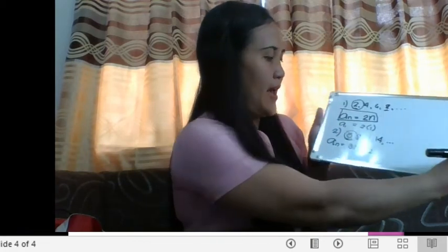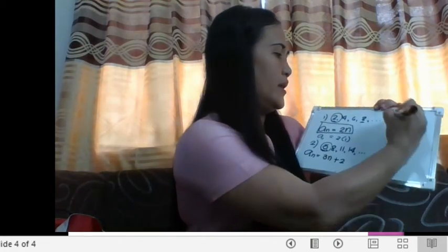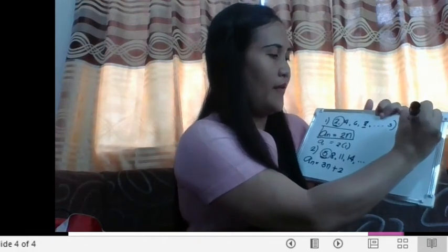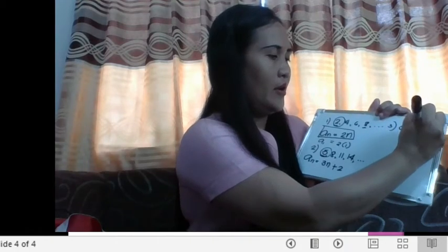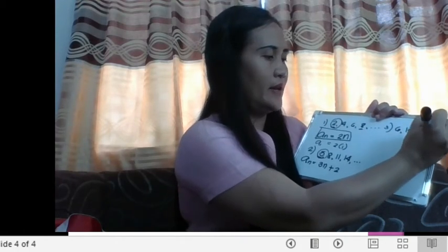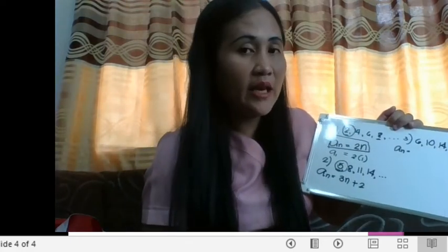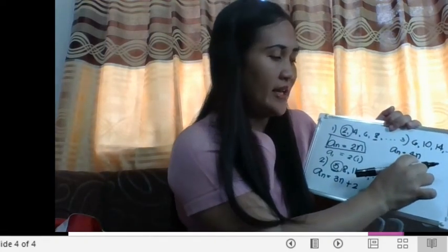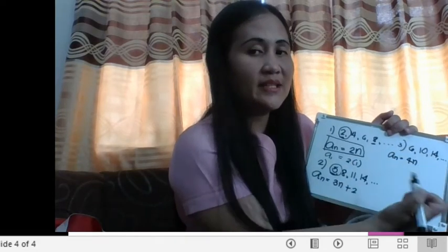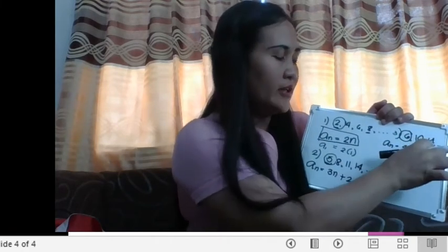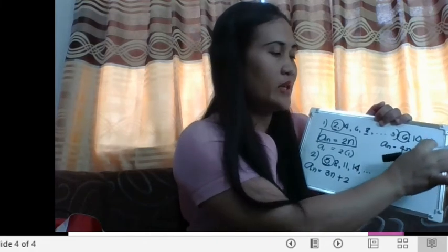For number 3, we have the sequence 6, 10, 14. The number being added is 4, so we write a sub n equal to 4n. But 4 times 1 is 4, and our first term is 6, so we have to add 2 again. Our equation becomes a sub n equals 4n plus 2. To check the third term: 4 times 3 is 12, plus 2 is 14, which is correct.